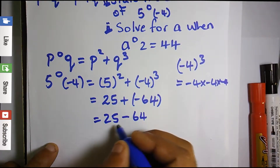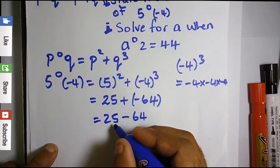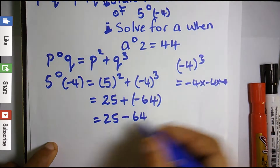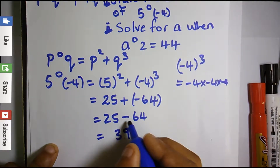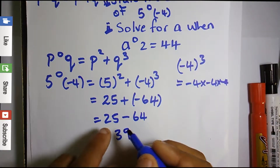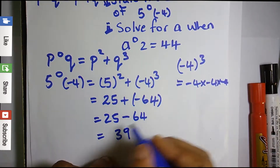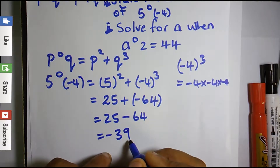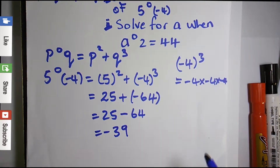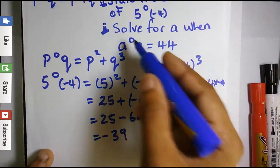We have 25 plus (−64). Since the negative number is bigger, we compute 64 minus 25: 64 minus 20 is 44, minus 5 more leaves 39. The answer is negative 39. So the answer to the first part of the question is −39.